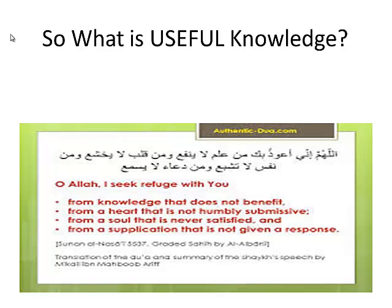Once you have that view, useful means useful in achieving some goal. If there is a purpose to life, then knowledge is useful if it helps you achieve that purpose. Knowledge is harmful if it prevents you from achieving that goal. But if there is no goal, then everything is the same. In Alice in Wonderland by Lewis Carroll, Alice comes to a fork in the road and asks a cat which direction she should take. The cat says, 'Where do you want to go?' She says it doesn't matter. The cat says, 'Then it does not matter.' If you do not have a goal, you can go in any direction.